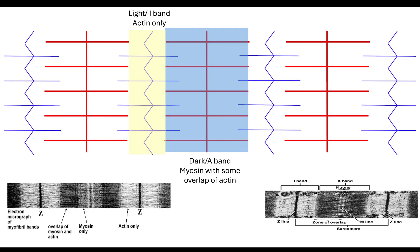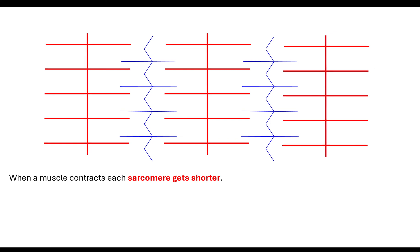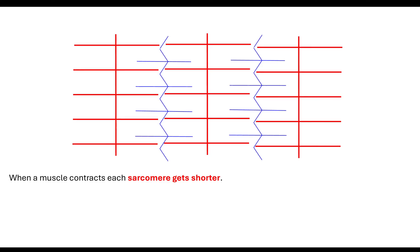That is where there's myosin with a little bit of overlap of actin. At the ends it'll be darker because of that overlap. What we can see is when a muscle actually contracts,